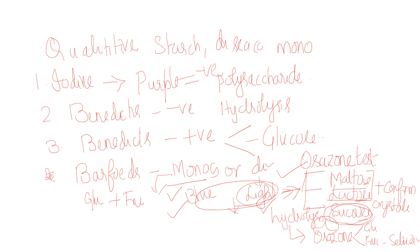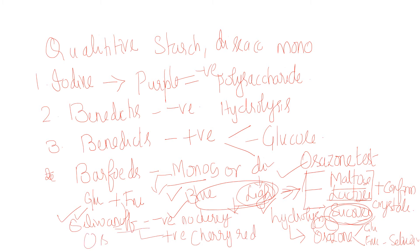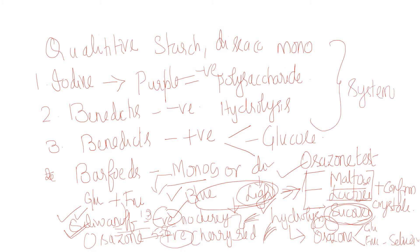If you have a monosaccharide, you can expect either glucose or fructose. For glucose, the Seliwanoff's test will be negative — no cherry red color. That itself confirms it is glucose. If it is fructose, Seliwanoff's test gives a positive cherry red color. In the osazone test, both sugars give needle-shaped crystals, but glucose takes 10 minutes and fructose takes 5 to 8 minutes. This is the systematic analysis for carbohydrate qualitative testing.